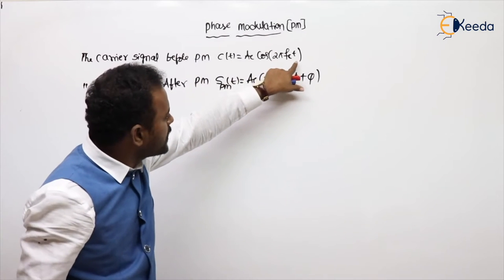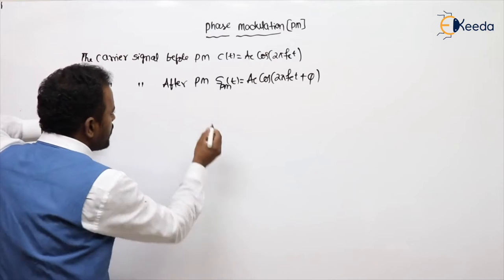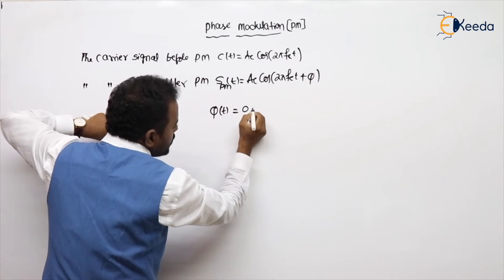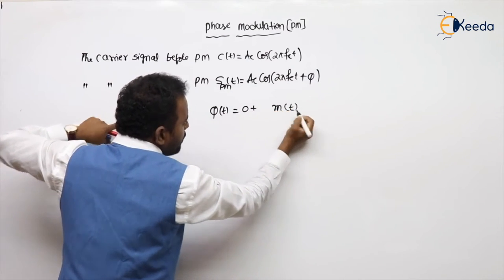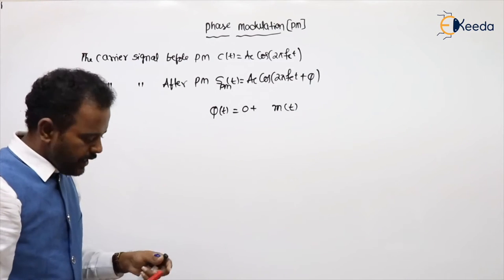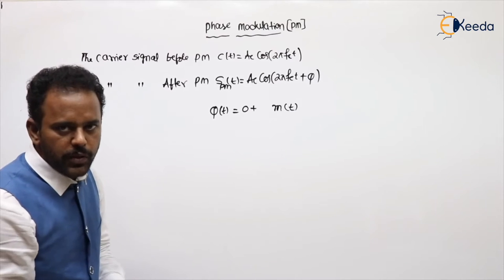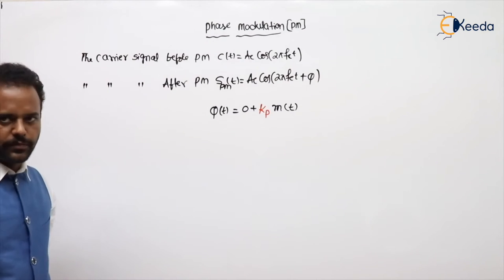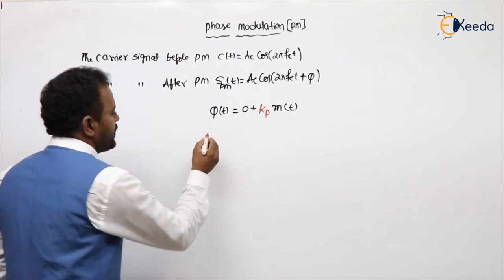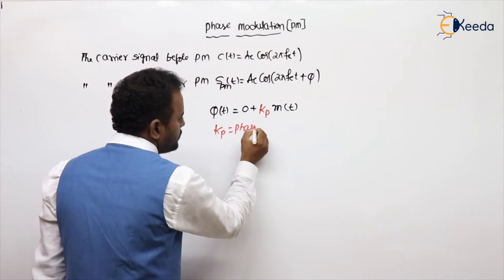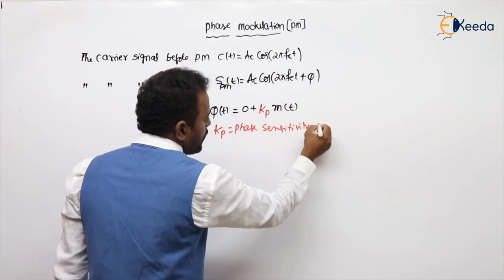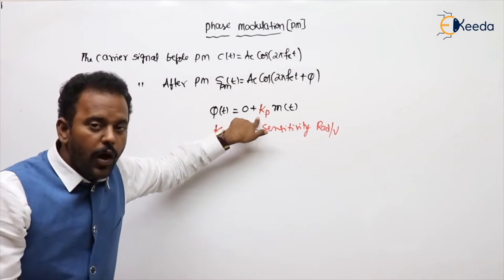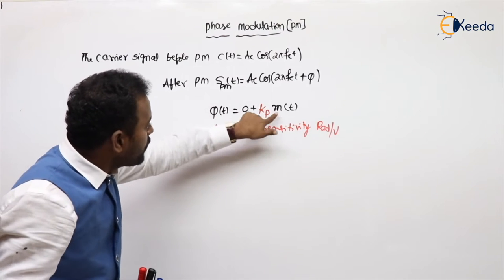This is a carrier having 0 phase that is varied to φ because it is phase modulation. The phase modulation definition: it is the process of varying the phase φ(t) of a carrier — initially 0 — linearly according to amplitude variations of the message. Here, phase is on one side and amplitude is on the other side. To convert amplitude to phase, we use the parameter kp, which is the phase sensitivity, in radians per volt.